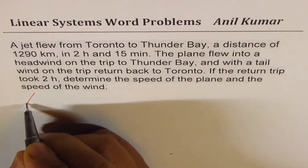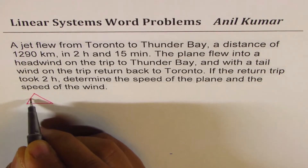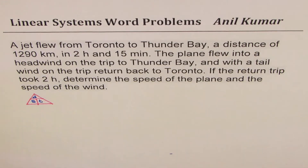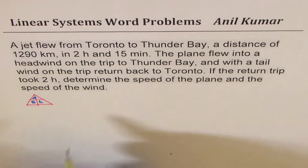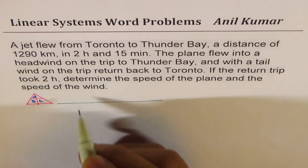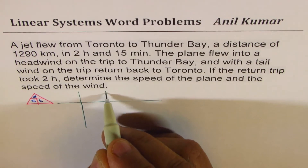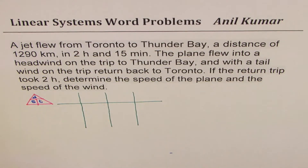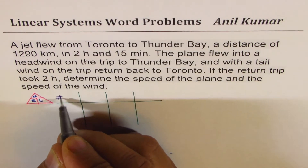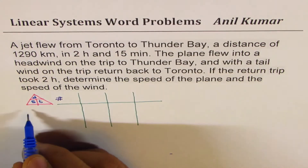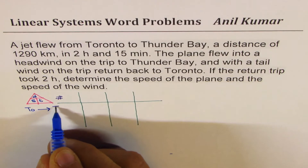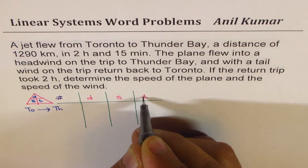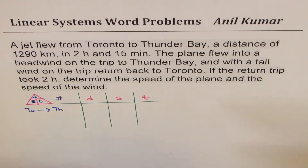Whenever you look at distance, speed, and time, remember they are related by the triangle: distance is speed multiplied by time. It's a good idea to keep that in mind. I also prefer to make a table when solving such questions. So we have two scenarios: the jet flew from Toronto to Thunder Bay, and the return trip. Let me set up the table with columns for distance, speed, and time.